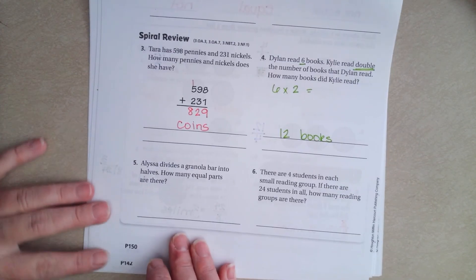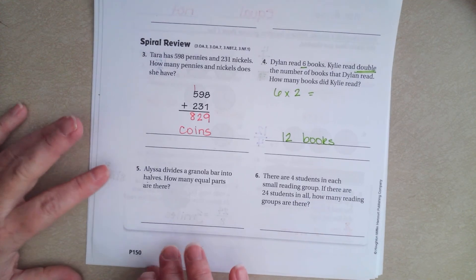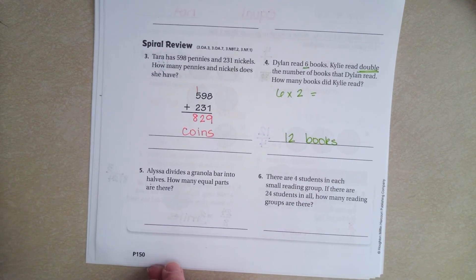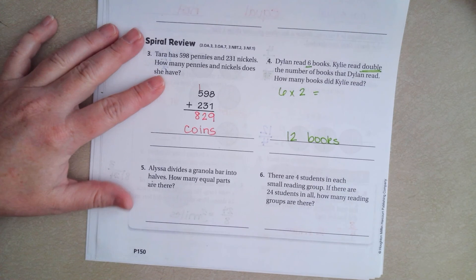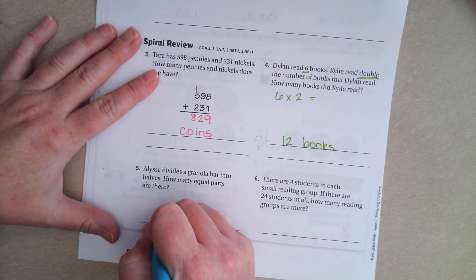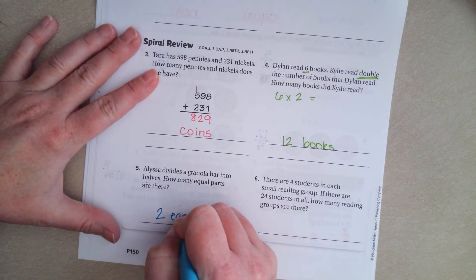Alyssa divides a granola bar into halves, so she cut them in half. How many equal parts are there? Well, when you cut a sandwich in half, you have two equal parts.